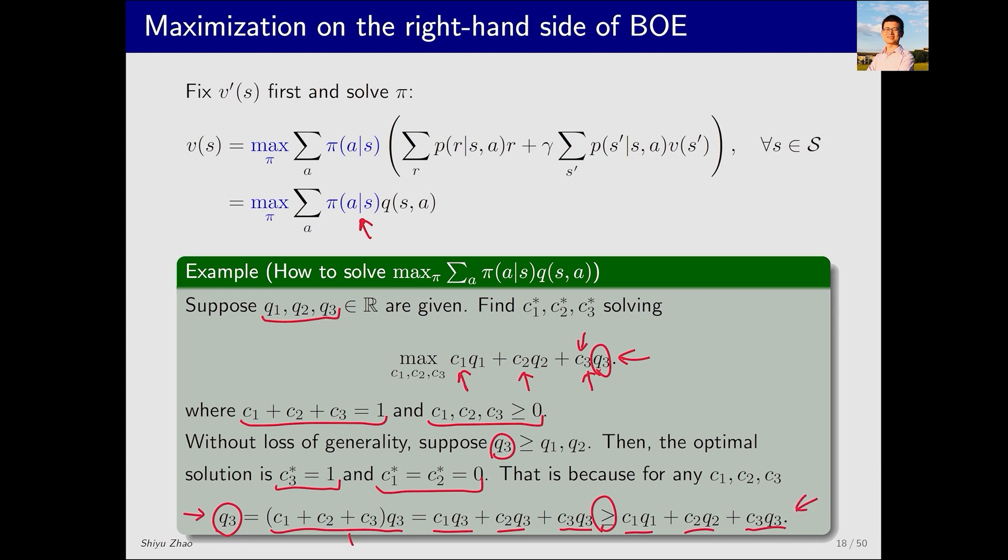So looking from the far left is Q3, and the far right is such a sum, which means Q3 is greater than all. Regardless of the values taken by C1, C2 and C3, Q3 is always greater than or equal to them. This clearly corresponds to the situation where C3 equals 1. So we know its optimal solution should be C3 equals 1. This approach can also be applied to solving the Bellman optimality equation.